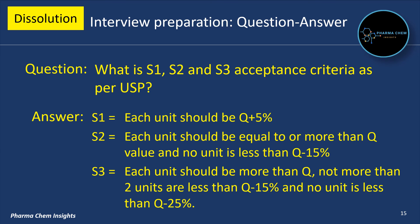What are the S1, S2, and S3 acceptance criteria as per USP? In S1, each unit should be Q plus 5%. In S2, the average of all units should be equal to or greater than Q, and no unit should be less than Q minus 15%. In S3, no unit should be less than Q minus 25%.